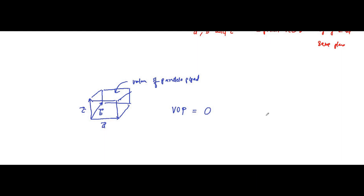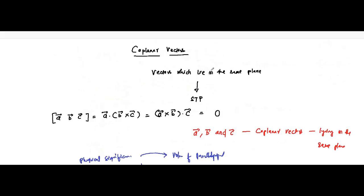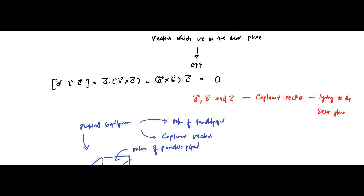If they lie in the same plane, it means it's two-dimensional — the third dimension is not there — which means the volume of the parallelepiped is zero, which means they are coplanar vectors. This is the geometrical interpretation of the scalar triple product: it can be used to determine the volume of the three-dimensional parallelepiped and also to identify coplanar vectors. When the scalar triple product equals zero, the vectors are coplanar — this is the essential condition.